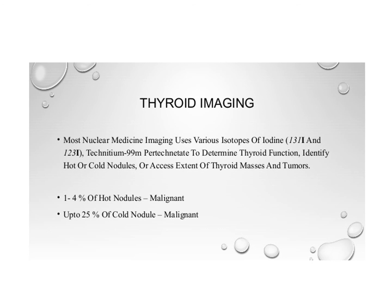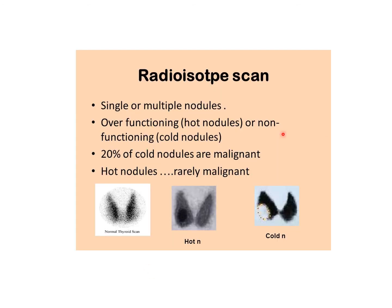Another important imaging method is thyroid imaging. The dye used is technetium-99 pertechnetate to determine thyroid function. Nodules are classified as hot nodules and cold nodules. One to four percent of hot nodules are malignant, and up to 25 percent of cold nodules are malignant. Overf-unctioning nodules are hot nodules and non-functioning nodules are cold nodules. Hot nodules appear more radiolucent compared to the thyroid, and cold nodules appear radiopaque.